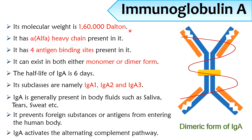Immunoglobulin A: The molecular weight of IgA is 160 kilodaltons. IgA has alpha type heavy chains. IgA has four binding sites and can exist in either monomer or dimer form. The half-life of IgA is six days. IgA is classified into three subclasses: IgA1, IgA2, and IgA3. IgA is generally present in body fluids such as saliva, tears, and sweat. IgA prevents foreign substances or antigens from entering the human body and activates the alternative complement pathway.